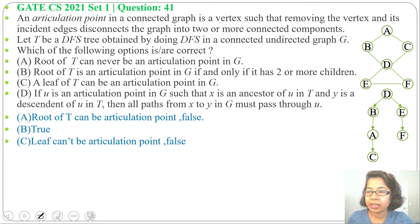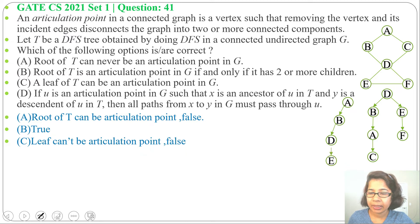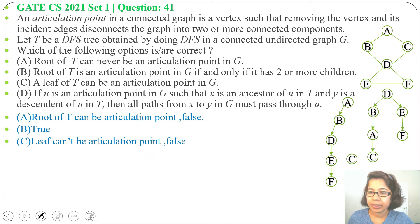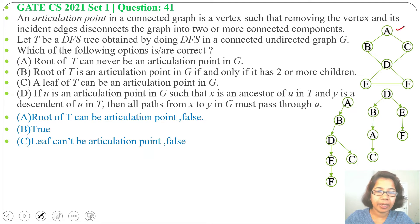Before doing option D, let me create another DFS tree starting from A. From A we visit B, from B we visit D, from D we visit E, from E we visit F. Then from F we backtrack, and from D we visit C. So this is the DFS tree starting from A.